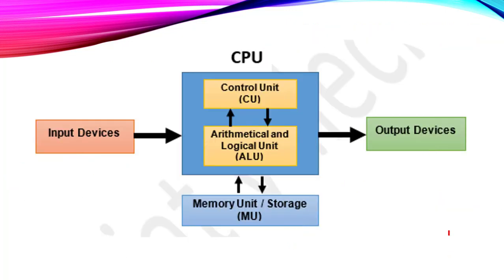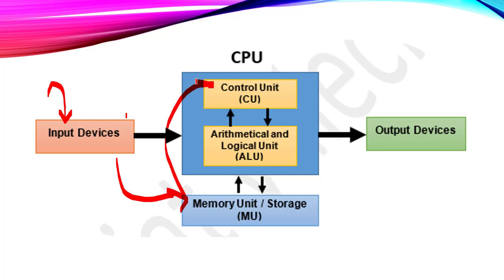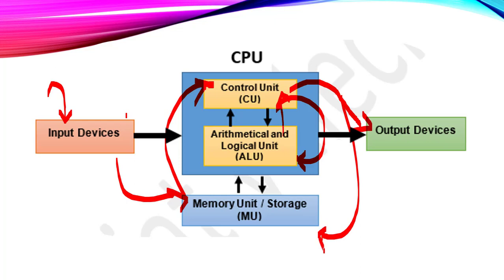Let's review the diagram once again. Whenever you give some input to your computer, that data will first be given to the computer's memory. Then that instruction is given to the CU, which determines whether it is an operational task or a simple output operation. If there is any kind of calculation, that task will be given to the ALU. The ALU performs the given operations and after calculating the result, the data is given back to the CU, which then sends that result to the output devices as well as to the computer's memory. So this is our complete IPO cycle combined with the machine cycle.